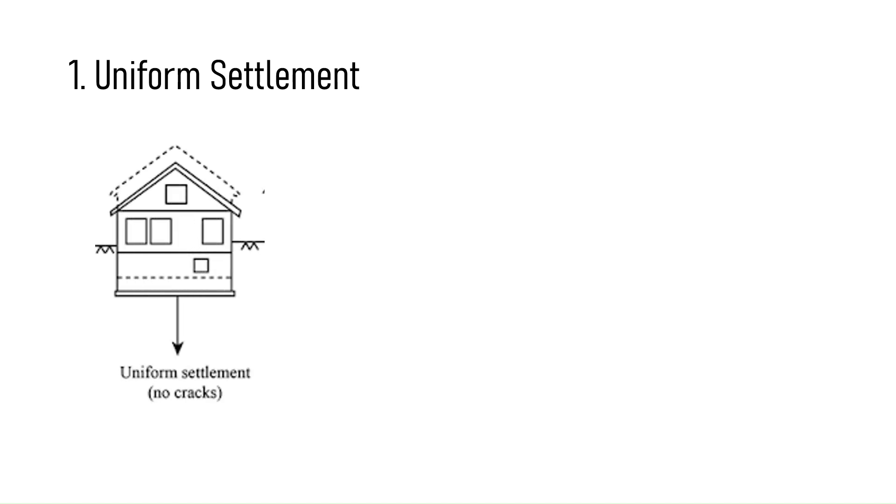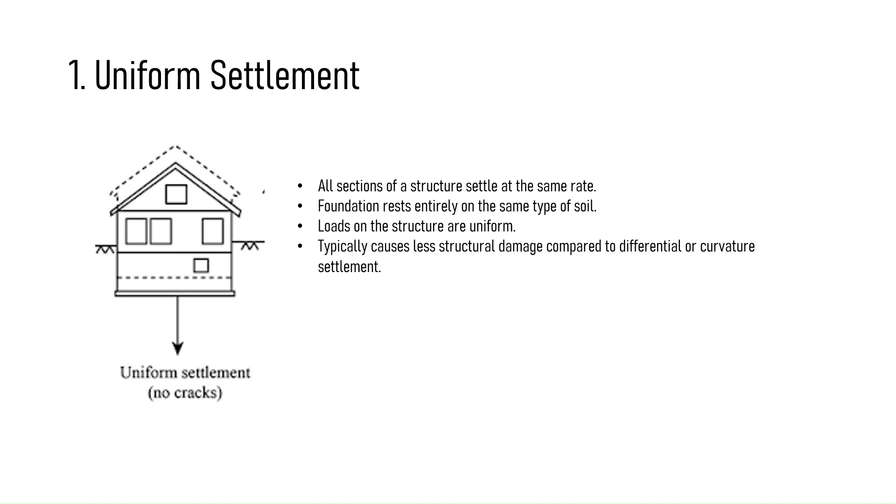Number one is uniform foundation settlement. Uniform foundation settlement occurs when all the sections of a structure undergo the same rate of settling. Uniform foundation settlement is likely to occur when the entire portion of the foundation lies on the same kind of soil, and the loads on the structure are uniform throughout. Compared to differential settlement, uniform foundation settlement is normal and typically causes less structural damage. However, uniform settlement influences the underground building utilities like sewer, water supply, and jamming of doors as well as windows.